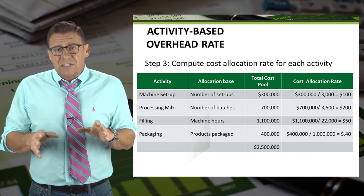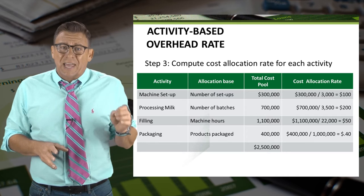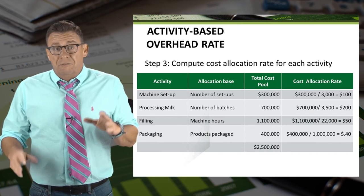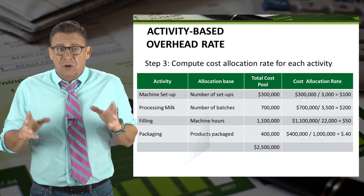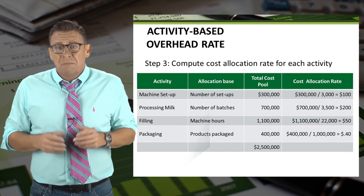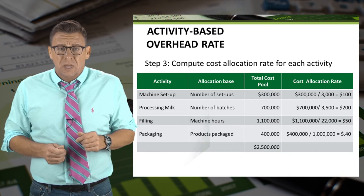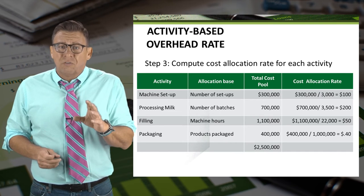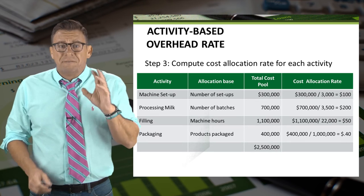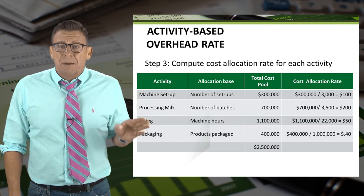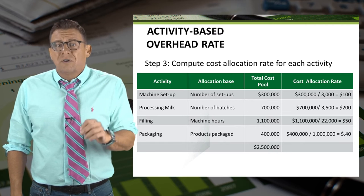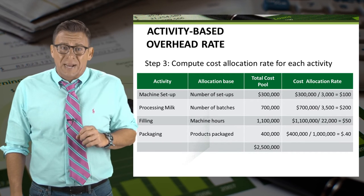The third step is to calculate the overhead allocation rate for each activity. If you want to think of this as a predetermined overhead rate for each activity, that's perfectly fine because that's what we're doing. The estimated overhead cost per activity divided by the estimated number of cost driver activities equals the overhead allocation rate per activity.